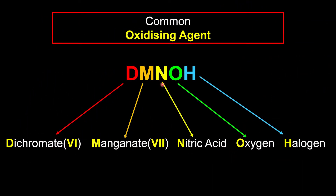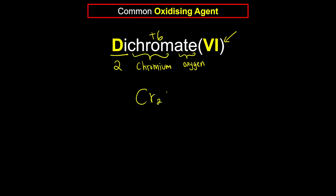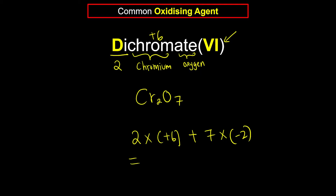Let's explore our oxidizing agents one by one — don't forget: 'Don't make noise on holiday.' First, dichromate(VI). We know it undergoes reduction. 'Di' means 2, 'chrom' means chromium, 'ate' means oxygen is bonded together, and the Roman numeral VI tells us the oxidation state — positive 6 for chromium. So let's write the chemical equation: Cr₂O₇. Chromium is +6, we have 2 of the +6 ions plus 7 oxygens at −2 each. The net charge is 12 − 14 = −2, so this ion is 2−.